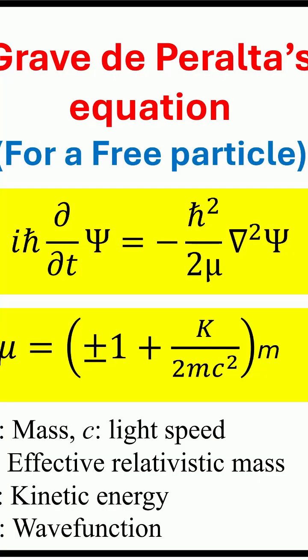Episode 5: Grave de Peralta's equations, quantum waves collapse due to strong attractive electric fields, and the number of chemical elements in the periodic table. Episode 6: Gravitational Atoms and the Quantum Classical Frontier at the Planck Mass.